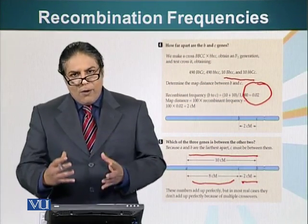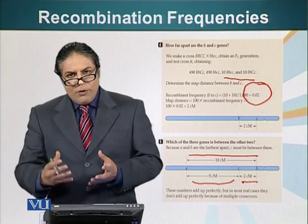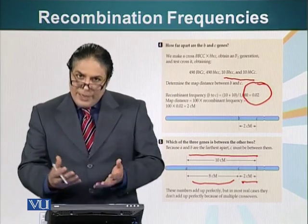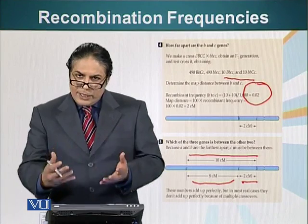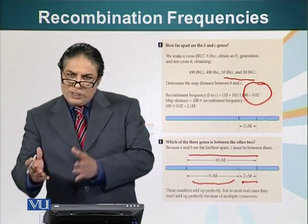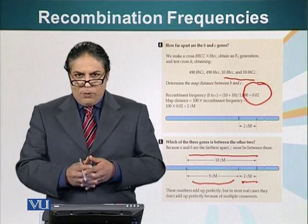This is how geneticists were able to make genetic maps for different organisms and this information was very useful. It had practical applications also. You could predict what would be the recombination frequency between, for example, two genes present on the same chromosome.